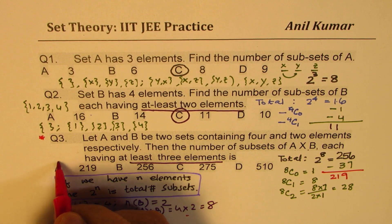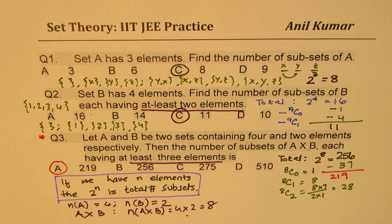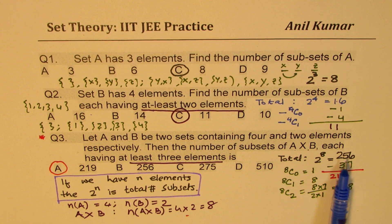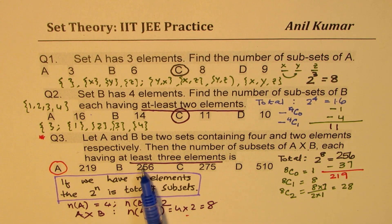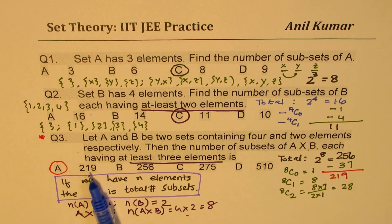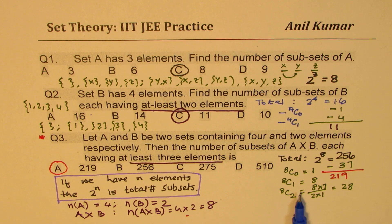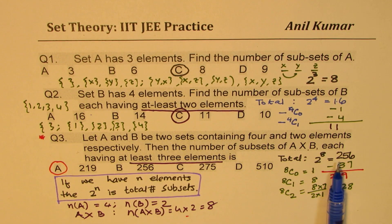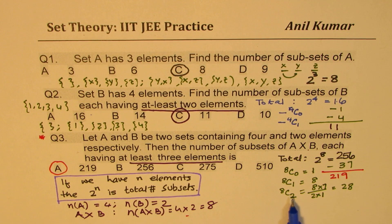So that is how you get option A as the correct option for question number three. Well, from the choices given, as soon as you found that 2 to the power of 8 is 256, and we have to take away something, you knew that the answer should be 219. So from all the possible combinations which are 256, you have to take away the ones which is a null set, then set with one element only, eight of them, and with two elements each. 8 times 2 divided by 2 times 1, 28. Add them all, take away from 256 to get your answer.